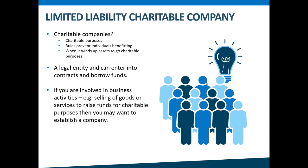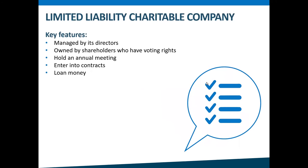A company is its own legal entity that is separate from the individuals involved in running it. A company can enter into contracts and borrow funds. If you are involved in business activities — for example, the selling of goods or services to fundraise for charitable purposes — then you may want to establish a company to make it easier to do business. The key features of a company are that it is managed by its directors and owned by its shareholders, who control its activities by way of voting rights. Companies are required to have an annual meeting, and because they are their own legal entity, they can enter into contracts, borrow funds, buy or rent property, apply for funding, and it can also be easier to get a bank loan if you're a company.